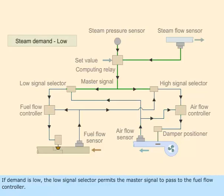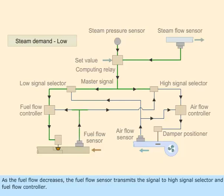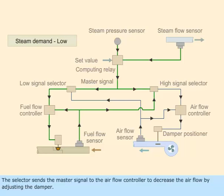If demand is low, the low signal selector permits the master signal to pass to the fuel flow controller. The fuel flow controller decreases the flow of fuel by adjusting the fuel valve. As the fuel flow decreases, the fuel flow sensor transmits the signal to the high signal selector and fuel flow controller. The selector then sends the master signal to the air flow controller to decrease the air flow by adjusting the damper.